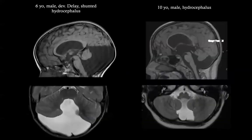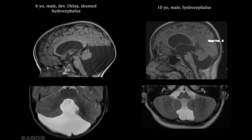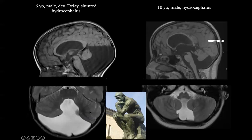Now let's look at two children both with hydrocephalus and something wrong in the posterior fossa. In the first case, the fastidium — the apex of the fourth ventricle — is flattened, and the tegmental vermian angle is enlarged. In the second case, the tegmental vermian angle is also enlarged and the fourth ventricle is enlarged with direct continuation with the posterior fossa, but the fastidium is normal and the cerebellar vermis looks normal. The axial views also look very different.